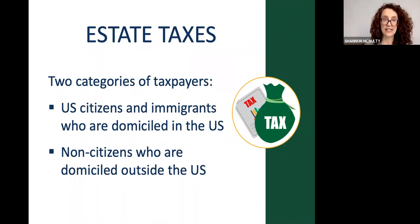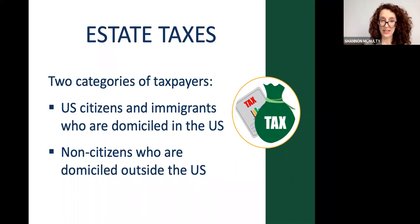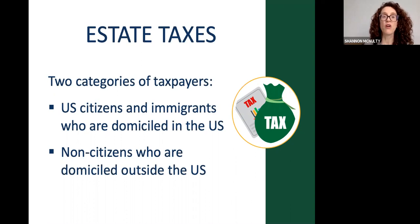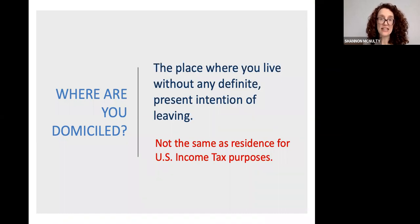The two categories are: U.S. citizens and immigrants who are domiciled in the U.S., and non-citizens who are domiciled outside the U.S. Domicile is the place where you live without any intention of leaving. If you're here on a green card, you must intend to stay in the United States indefinitely. If you're here on a work visa, the terms of that visa often require you to intend to return to your home country.